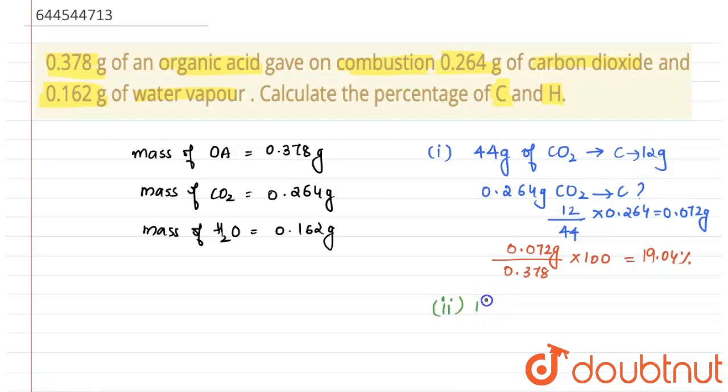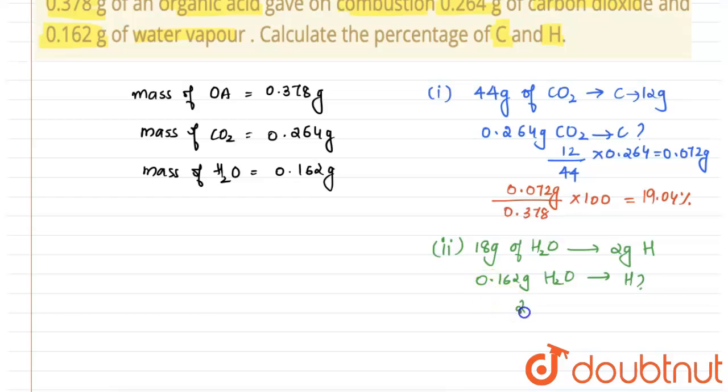18 gram of water molecule, that is one mole of water molecule, contains 2 gram of hydrogen atom. Then 0.162 gram of water molecule would contain 2 divided by 18 multiplied by 0.162. So this will be equal to 0.018 grams.